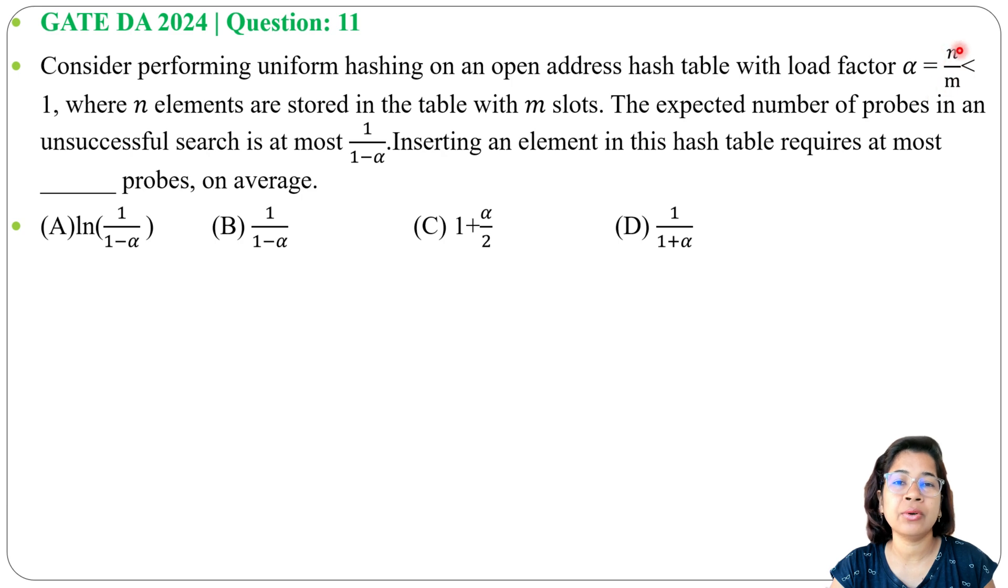load factor alpha equals to n divide m which is less than 1, where n elements are stored in the table with m slots. The expected number of probes in an unsuccessful search is at most 1 divide 1 minus alpha. So maximum number of probes required for an unsuccessful search is 1 divide 1 minus alpha. Inserting an element in this hash table requires at most dash probes on average, and 4 options are given.